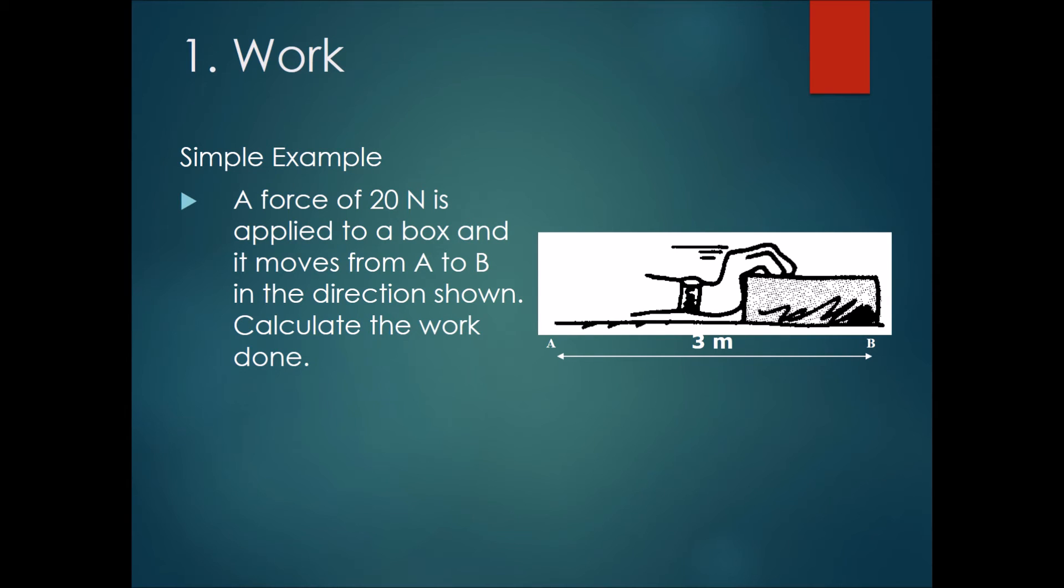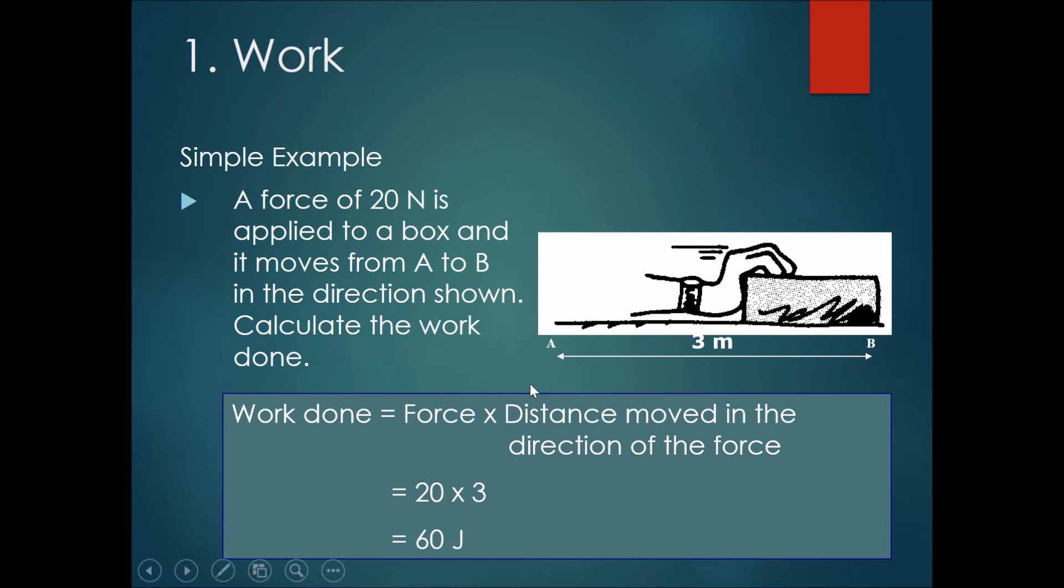Okay, let's go through the answers. The work done equals force times distance moved in the direction of the force. The force is 20 newtons and the distance moved is 3 meters, so it should be 20 × 3, getting you 60 joules.